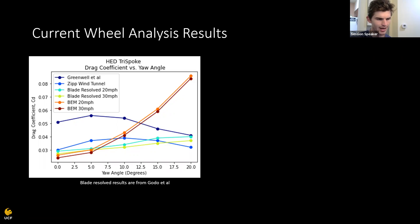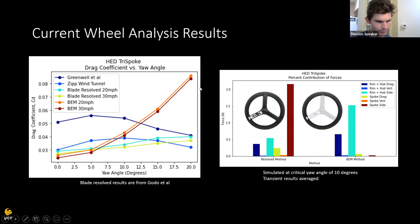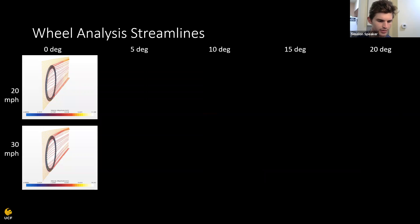Now, why is this happening? Well, let's take a look at the actual component forces. So on the left hand side, we have the resolved method forces from Matthew Godo's study. And on the right hand side, we have the data from our study with the blade element virtual disk. Now this is data from a critical yaw angle of 10 degrees. Transient results are averaged. Now, the biggest discrepancy here is clearly the spoke side force. And this is that dark red bar here. And this very small dark red bar here. Now this is practically the blade element momentum method basically producing no force. Whereas the resolved method is producing almost two newtons of force. So huge difference there. And it's telling me, well, the model is currently not working as it is, at least to its full capability.